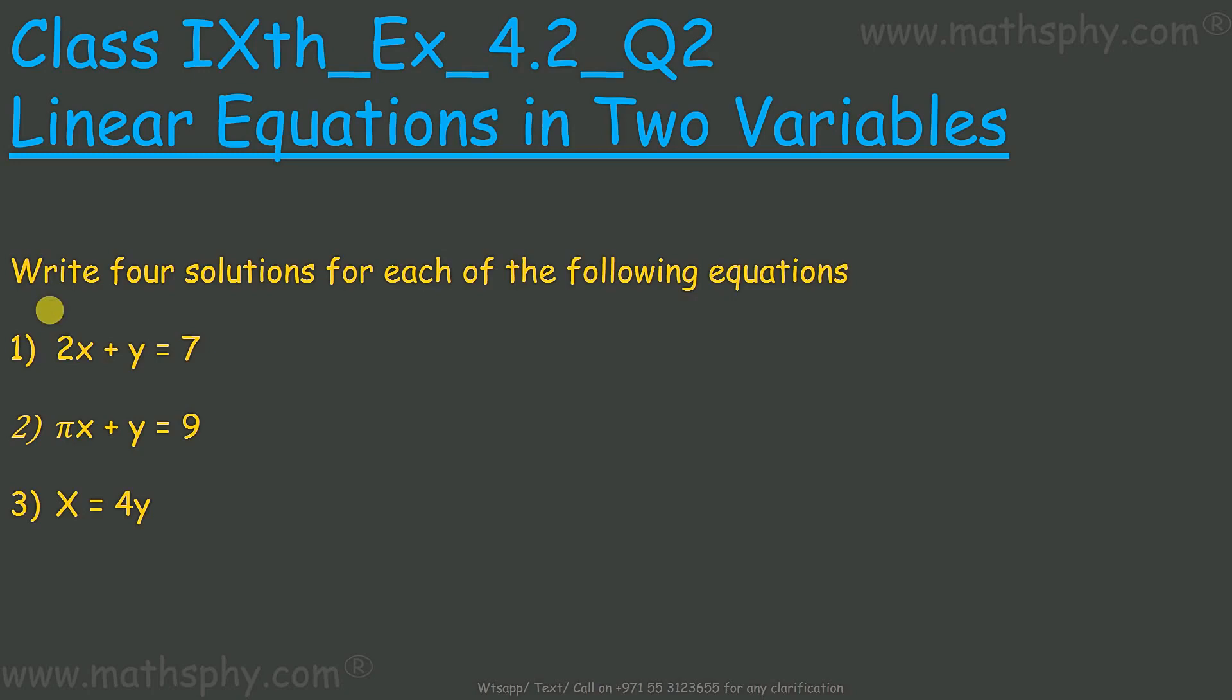This one here it says, write four solutions for each of the following equations. 2x plus y is 7, pi x plus y is 9, x is equal to 4y.